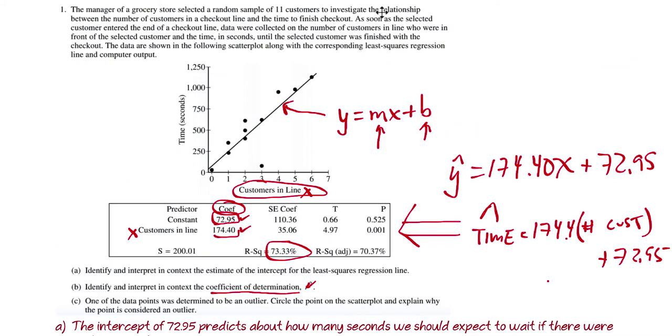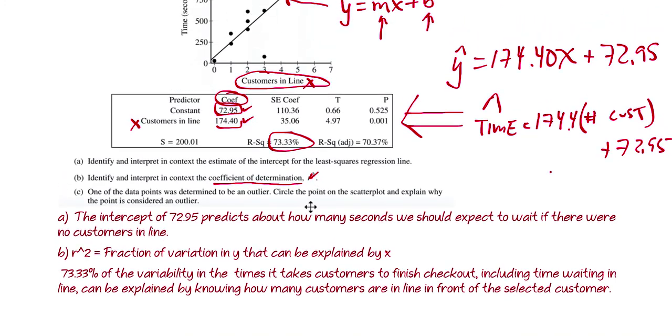You can go right up here and read that. And then that can be explained by x. And what is x? The number of customers in line. So that's what I would do for b. That was pretty straightforward. You just have to memorize what r-squared is. And then lastly.